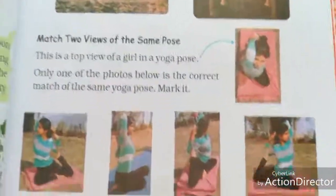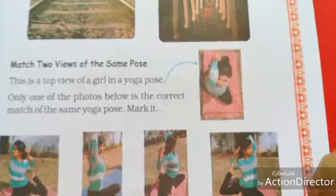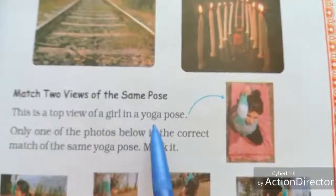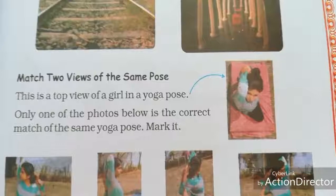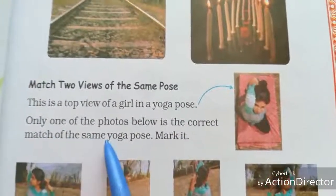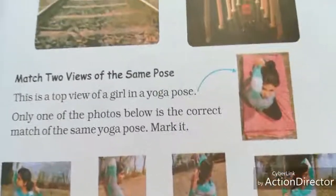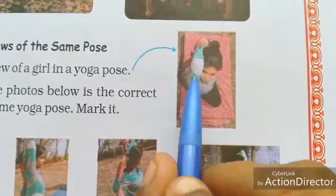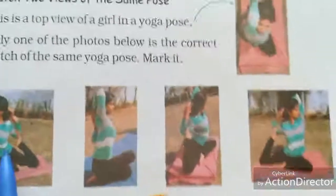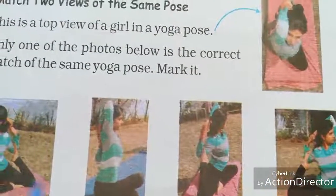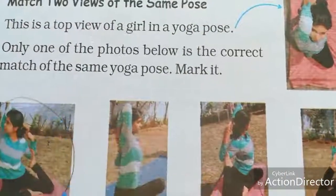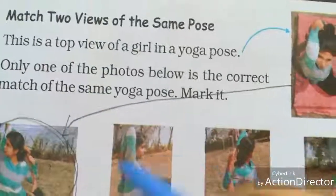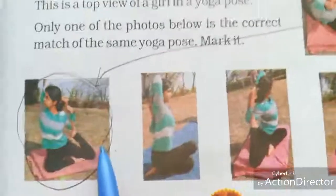Match two views of the same pose. This picture was taken from the top view — it is the top view of a girl in a yoga pose. Only one of the photos below is the correct match of the same yoga pose — mark it. She stretched her right arm. This is the side view, and this one is the top view, but the same pose.